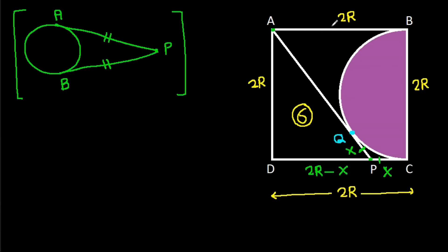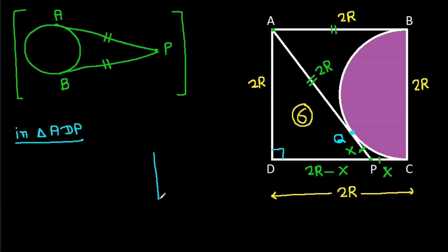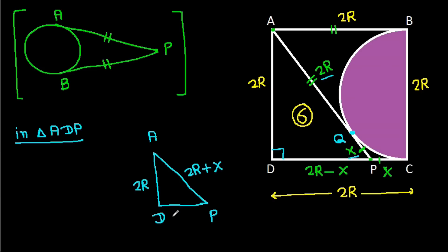And from point A, AB will be equal to AQ. Now, we know that ABCD is a square, which means this angle will be 90 degrees. So in triangle ADP: AD is 2R, and AP will be 2R plus X. And DP is 2R minus X, and this angle is 90 degrees.